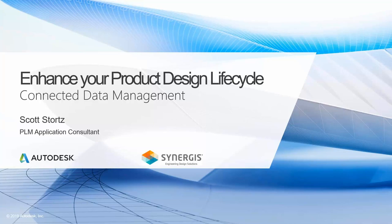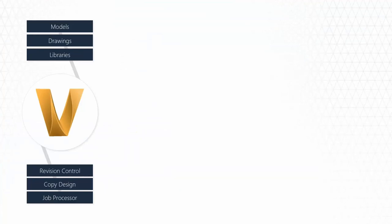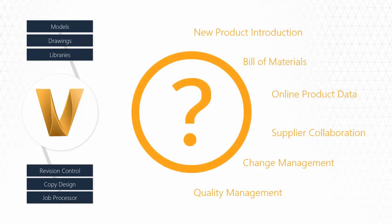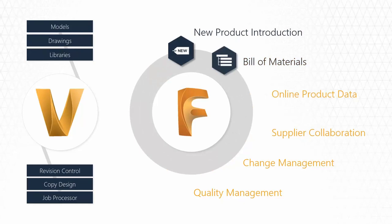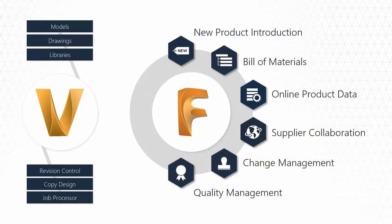I hope this presentation will give you some insight into how you can do something similar — if you have Vault today or are considering Vault, and possibly adding Fusion Lifecycle on top. Vault is your product data management solution where you're storing and controlling your CAD models and drawings. How is your company managing other business processes such as new product introduction, bills of materials, change management, and quality management? That's where a system like Fusion Lifecycle comes into play.